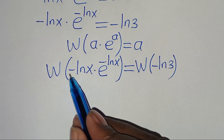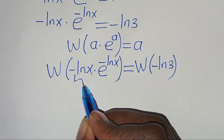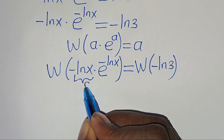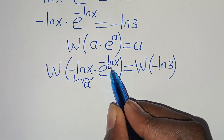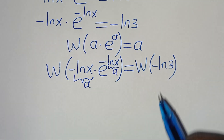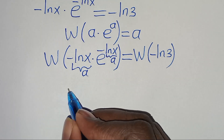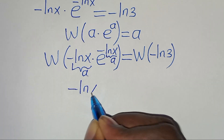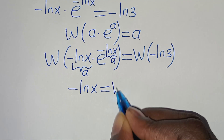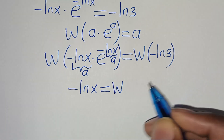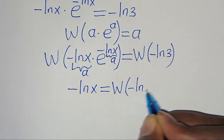Now, letting a equal minus ln(x), since we have minus ln(x) appearing as both the coefficient and the exponent argument, this implies that minus ln(x) is equal to the Lambert W function of minus ln(3).